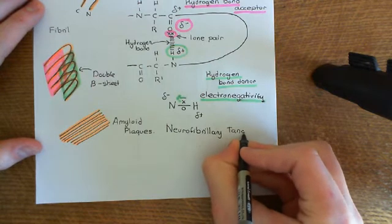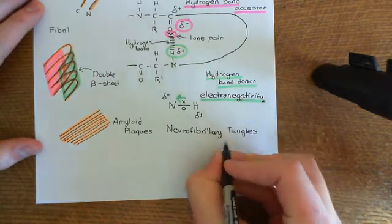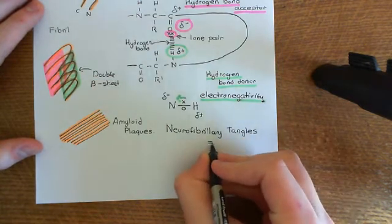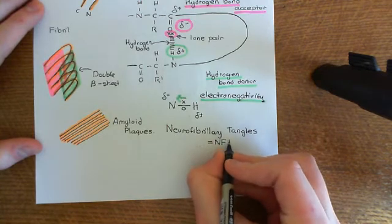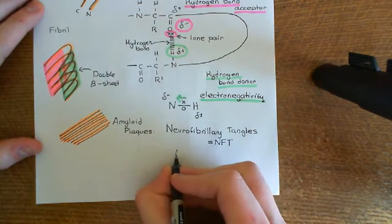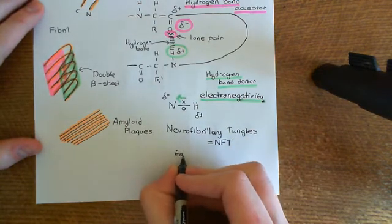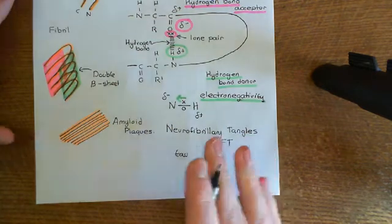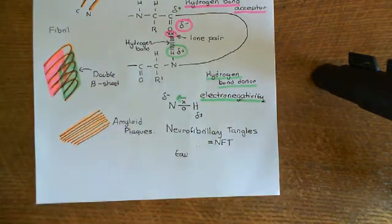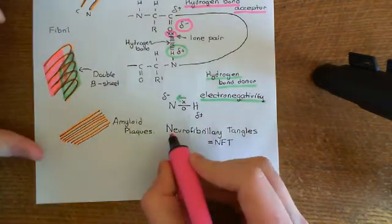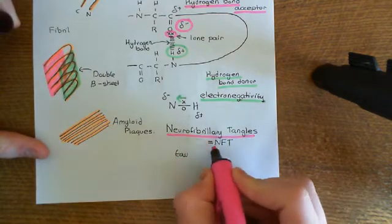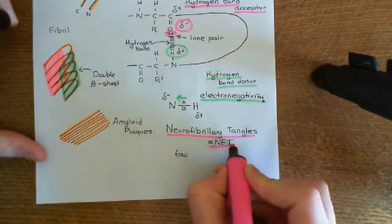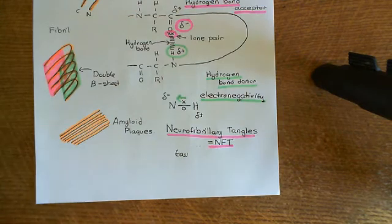Neurofibrillary tangles are going to occur because of a protein known as the tau protein. The tau protein is usually associated with microtubules. I'm going to give you a little bit of background information about microtubules — specifically microtubules in neurons.